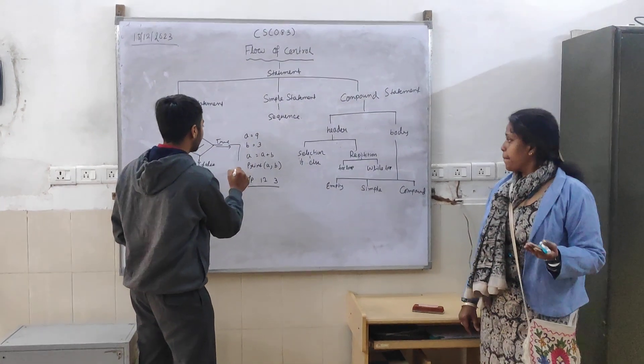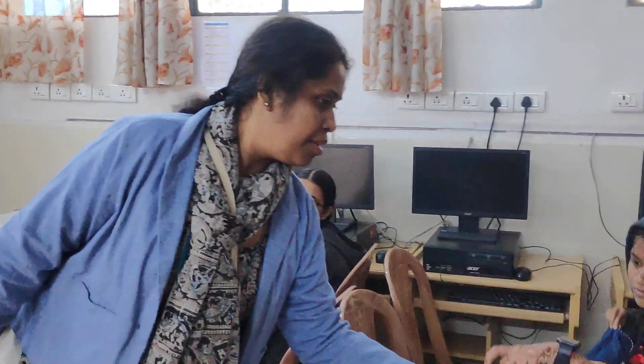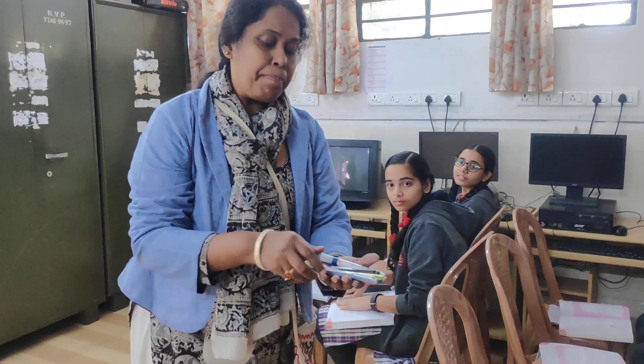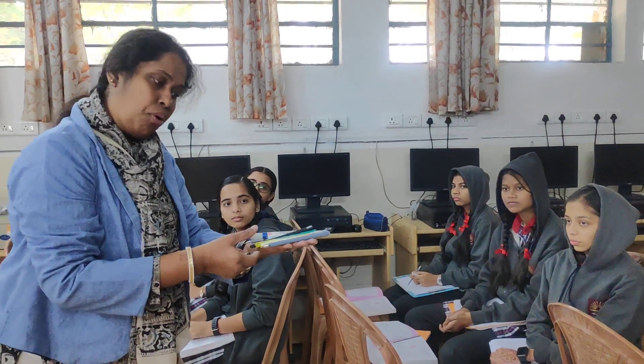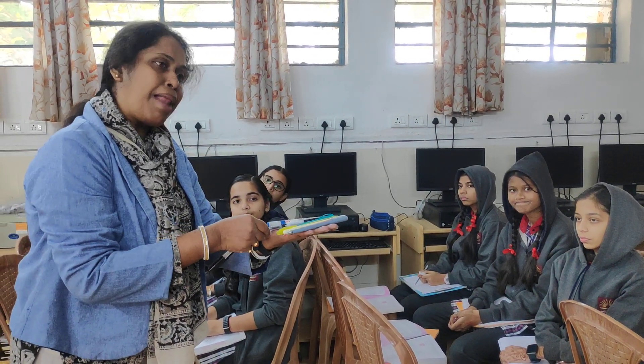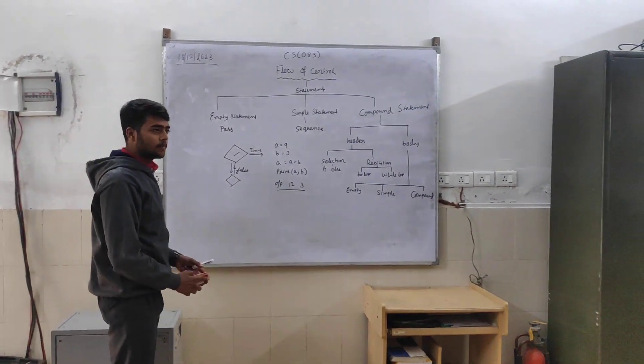If the statement is true, follow these steps; if false, follow different steps. For example, suppose you have a pen and we are told: please pick the black color pen. So we start checking — is it black? Yes, it is selected. Is it black? No. Is it black? No. Eventually, if yes, it is selected. This is the if condition — if condition selects things, and the else condition does different things. So selection means you have a choice and you pick accordingly.